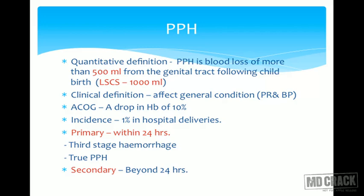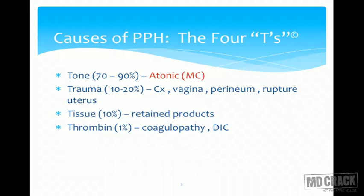Primary PPH is bleeding which takes place within 24 hours of delivery. It is divided into third stage haemorrhage, which is bleeding before the placenta gets delivered, and true PPH, which is bleeding after placental delivery. Secondary PPH is bleeding that takes place after 24 hours of delivery.